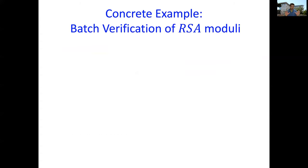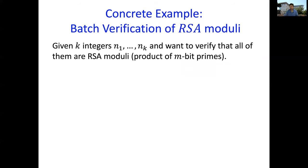Let's try to be very concrete. Here's an example. Suppose that we're given K integers, N1 up to NK, and we want to verify that all of them are RSA moduli, product of two m-bit primes. The trivial solution is to send over the factorization for each of the integers. You can easily check that the factorization is correct and has the right form. Can we do better?